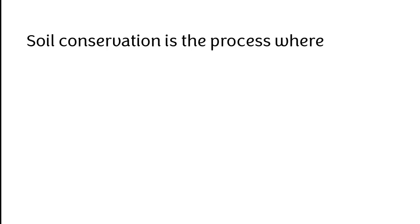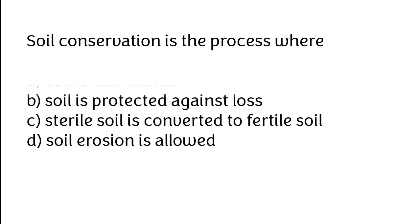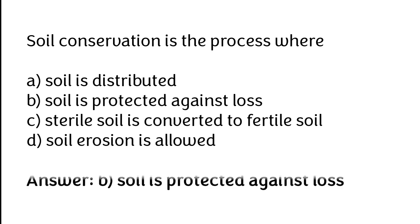Soil conservation is the process where: A) Soil is distributed, B) Soil is protected against loss, C) Sterile soil is converted to fertile soil, D) Soil erosion is allowed. The correct answer is option B — soil conservation is the process where soil is protected against loss.